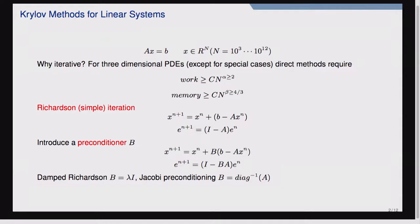When considering large algebraic systems where the size of vectors goes from 10 to the third to 10 to the twelfth, it's often advantageous to use iterative methods instead of direct methods. For direct methods, the work is at least some constant times n squared. So if you want to solve 10 to the 12th unknowns, you're doing 10 to the 24th work, which is unrealistic for the computers we have today.